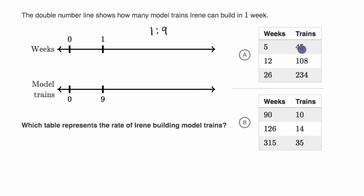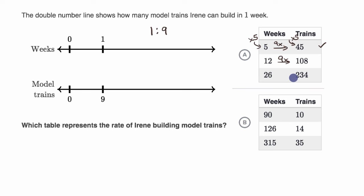Looking at the first table, I want to see where the ratio of weeks to trains stays at one to nine. Five to 45 — that is still one to nine. To go from one to five, I've multiplied by five, and to go from nine to 45, I've also multiplied by five. Twelve to 108: 12 times nine is 108. And 26 to 234: 26 times 10 is 260, minus 26, is 234. So in all these cases the ratio of weeks to trains is one to nine — this table is correct.